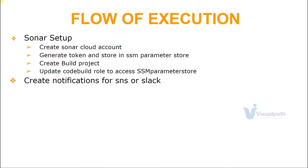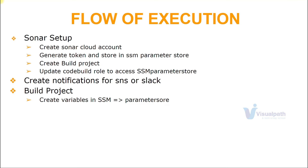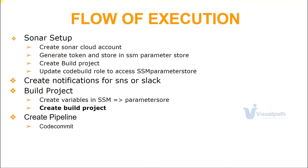We're going to create notifications so we can get alerts for our pipeline and any job. Then we'll create a build project which generates the artifact — a few more parameters will go into Parameter Store as variables. Then we create the pipeline to connect all these jobs together and test it by making a code change. When there is a code change on CodeCommit, it triggers this entire pipeline. We'll see an artifact uploaded in the S3 bucket. Up to this point, it's continuous integration — we will have set up the continuous integration pipeline.